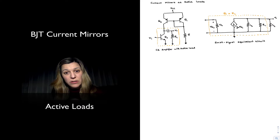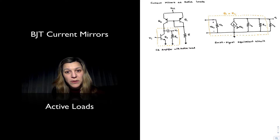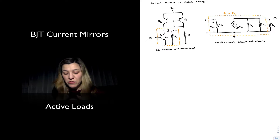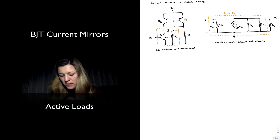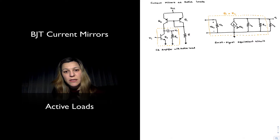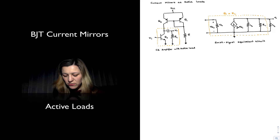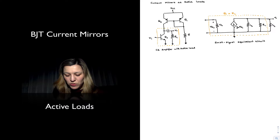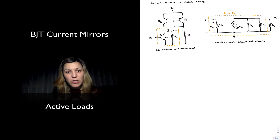This provides two advantages to the amplifier. Number one, it provides the biasing for the circuit, which as we have seen in integrated circuits, is a preferable biasing structure over something like the four-resistor biasing network. As well as it allows the amplifier to have a very large gain, because the current mirror or current source is replacing the collector resistor.